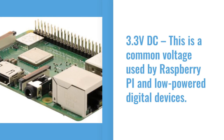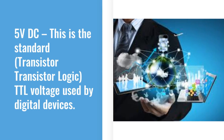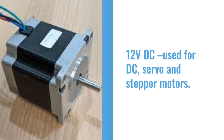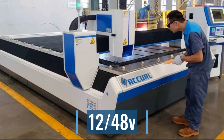There are several standard voltage levels that your circuit design might require: 3.3 volts DC, a common voltage used by Raspberry Pi and low powered digital devices; 5 volts DC, the standard transistor-transistor logic (TTL) voltage used by digital devices; 12 volts DC, used for DC servo and stepper motors; and 24 volts or 48 volts DC, widely used in CNC and 3D print projects.